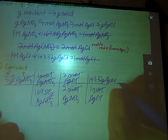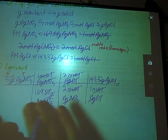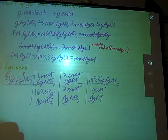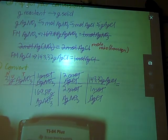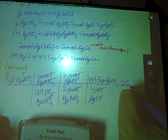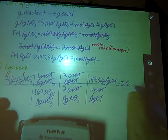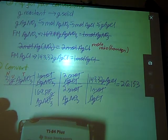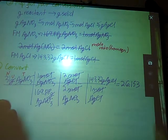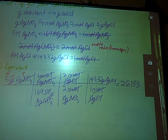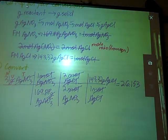Now we're just going to multiply all the way across the top, divided by all the way across the bottom. Pardon me while I do that in my calculator. 31 times 2 times 143.32 divided by 169.88 times 2. So my calculator spits out 26.153.